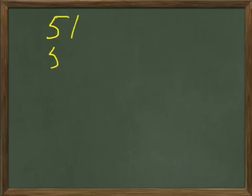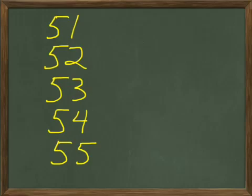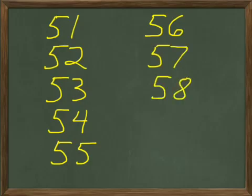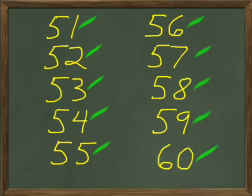This next group is going to start at 51. So we'll put 51 right here, then 52, 53, 54, 55. Up here it's going to be 56, and then 57, 58, 59, and 60. Let's go back and check these: 51, 52, 53, 54, 55, 56, 57, 58, 59, 60. We got them all.